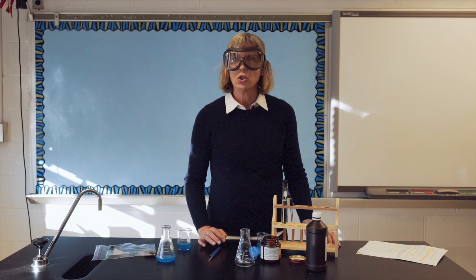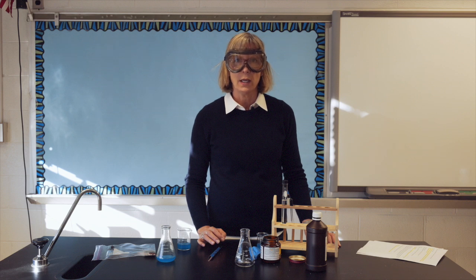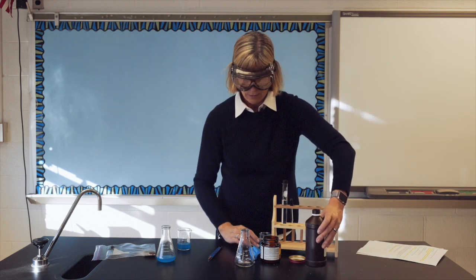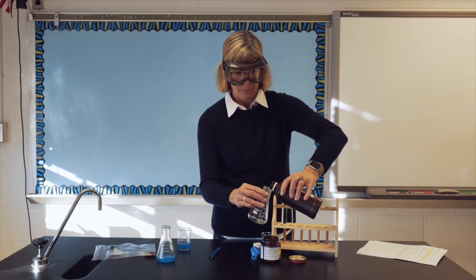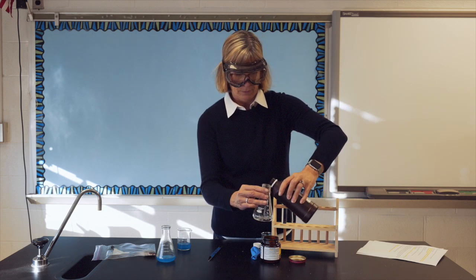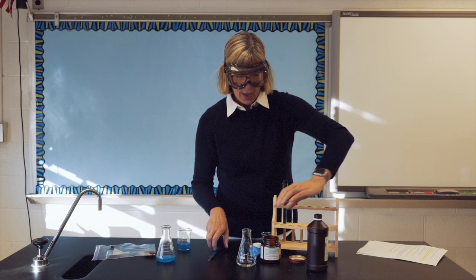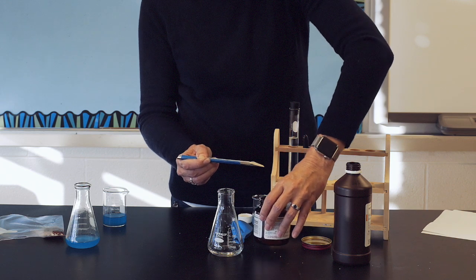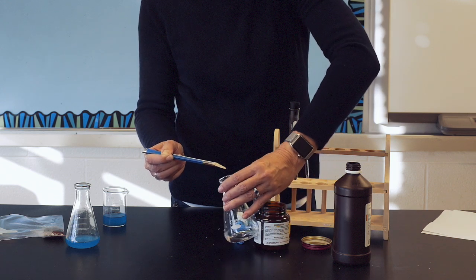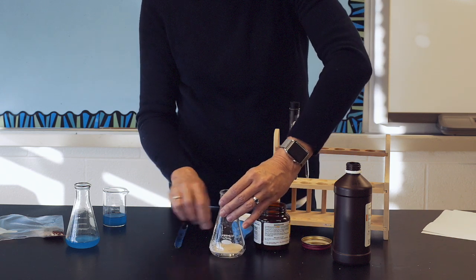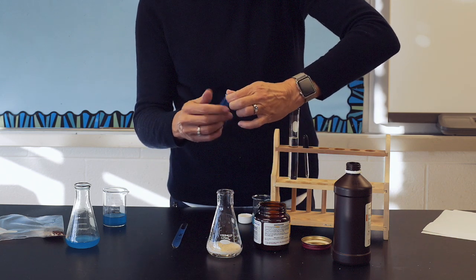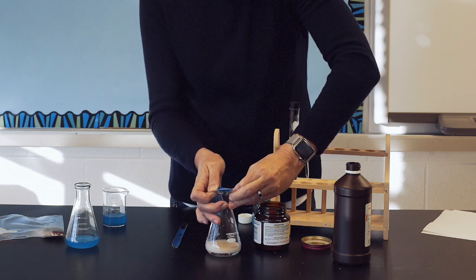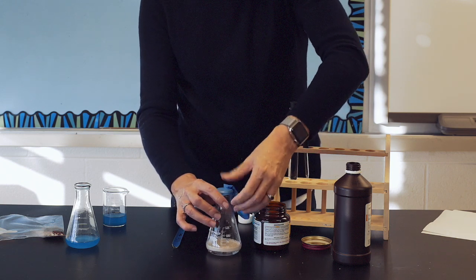Activity C directs you to pour 20 mLs of hydrogen peroxide into a small flask, and then add a pea-sized amount of baker's yeast to the flask, covering quickly with a balloon and then swirling gently.